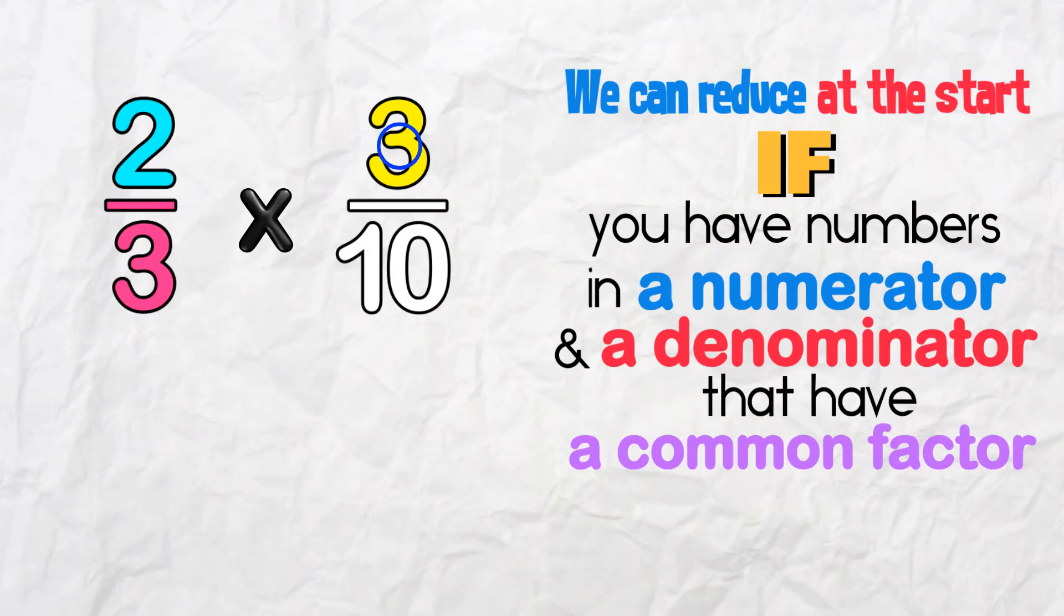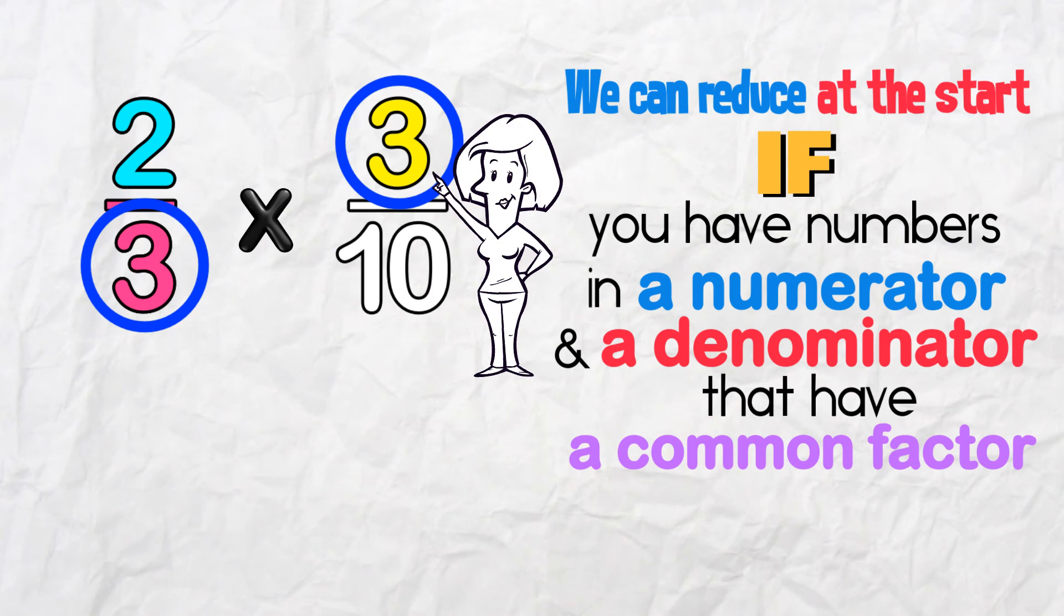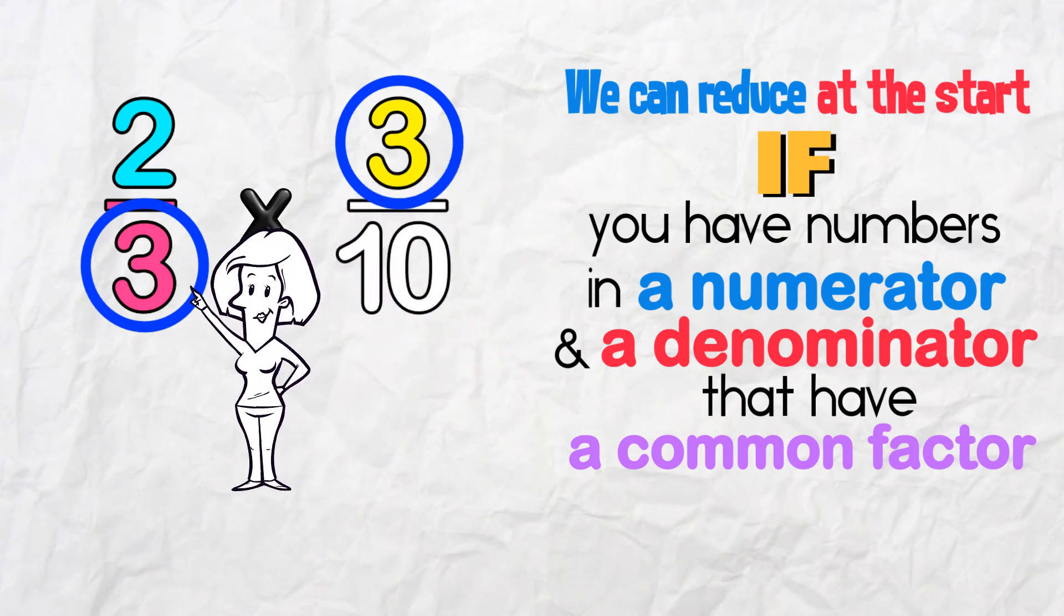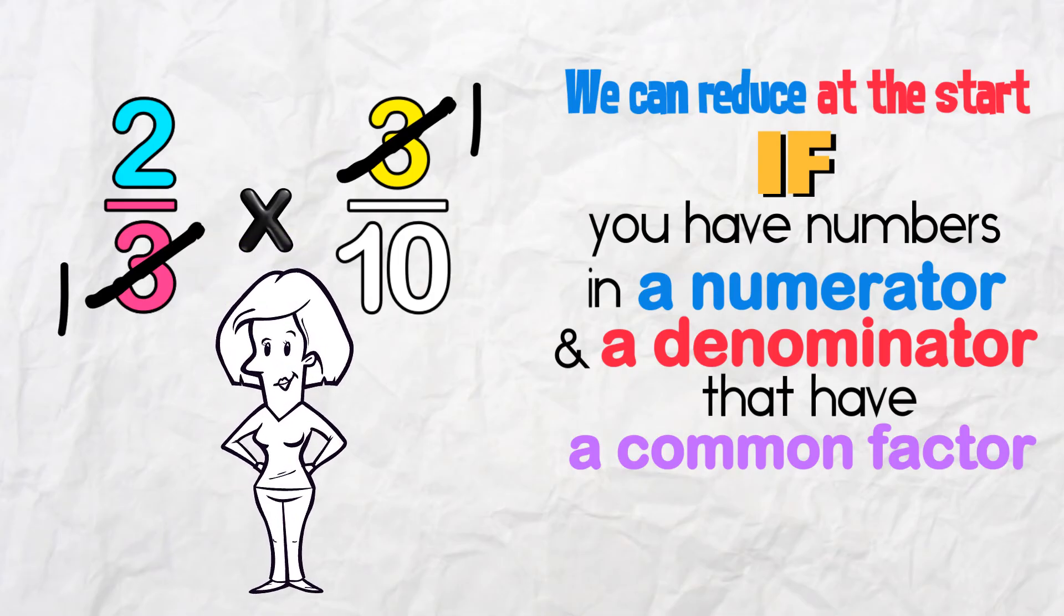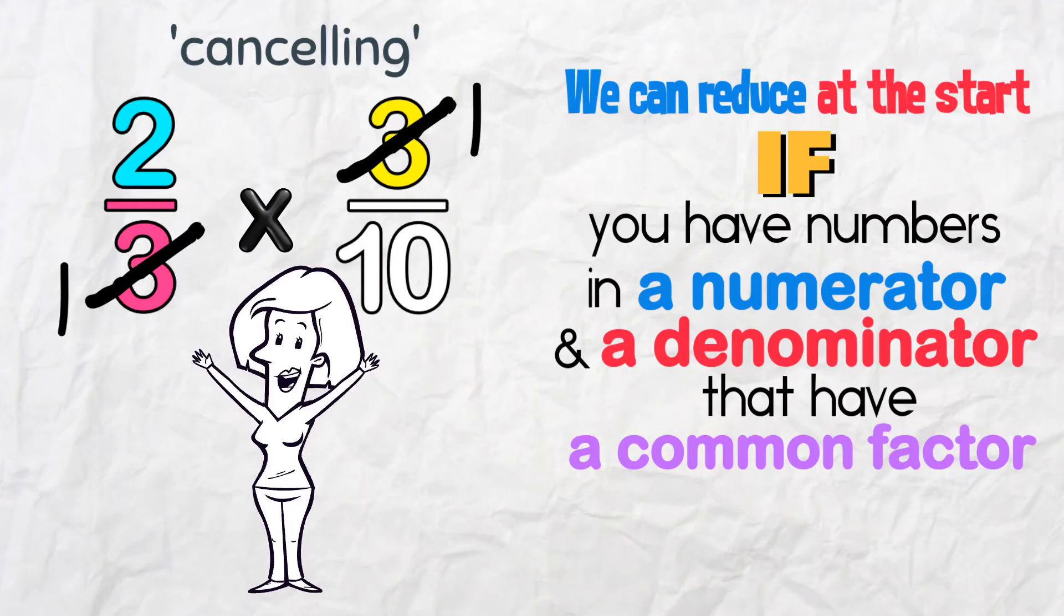We have a numerator and a denominator that are the same. If we divide this top and this bottom by 3, they each change to 1. This is also called cancelling. We've just cancelled the need to multiply by 3. Great!